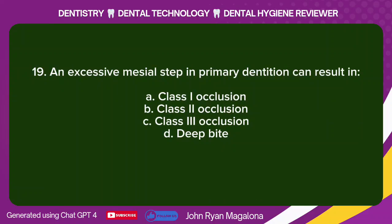Question 19: An excessive mesial step in primary dentition can result in: A. Class 1 occlusion. B. Class 2 occlusion. C. Class 3 occlusion. D. Deep bite. Answer: C. Class 3 occlusion.